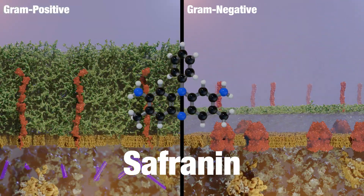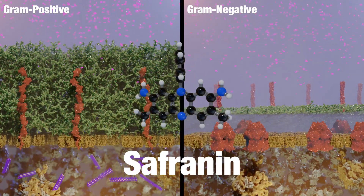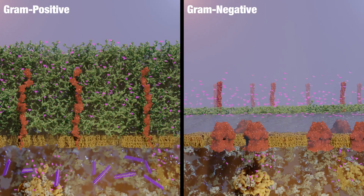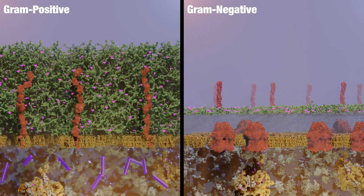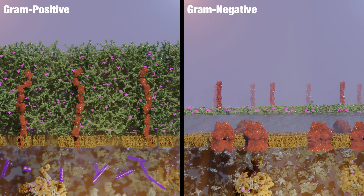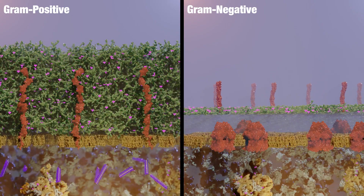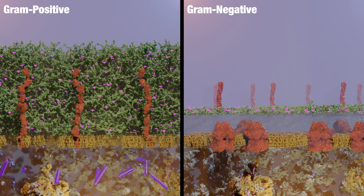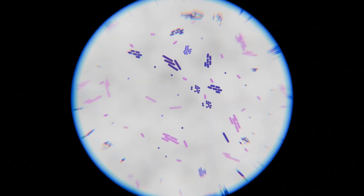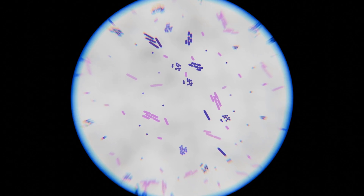Finally, the counterstain Safranin is applied. Safranin binds to negatively charged components within the cell. Safranin also stains the gram-positive cells; however, the trapped crystal violet stain completely overpowers the pink counterstain. The result: gram-positive bacteria appear purple and gram-negative bacteria appear pink.